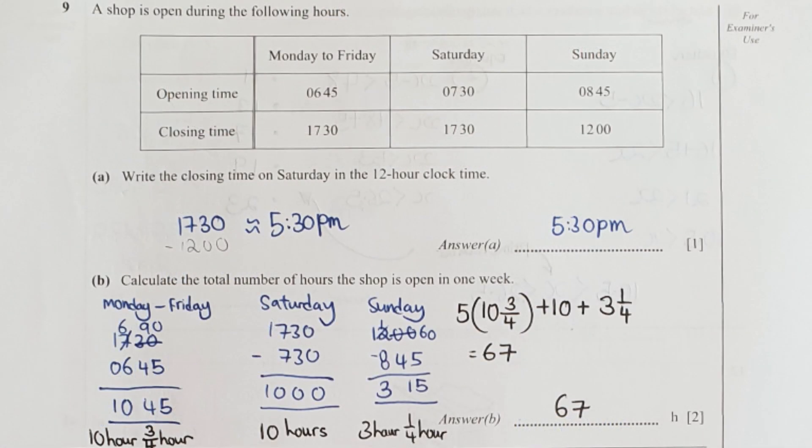Question nine, write down the closing time on Saturday in 12 hour format. So the 1730 minus 1200, you will get it as 5:30 PM.